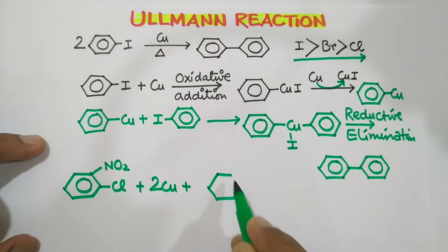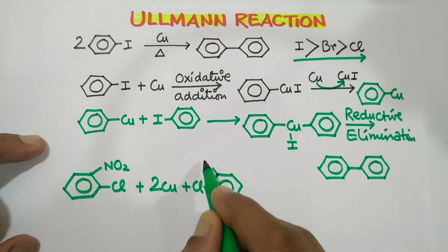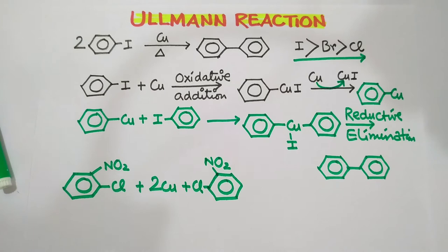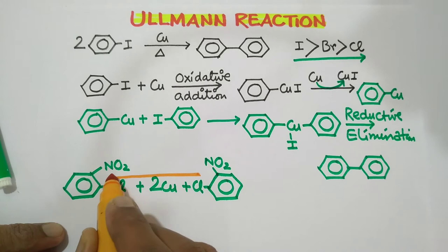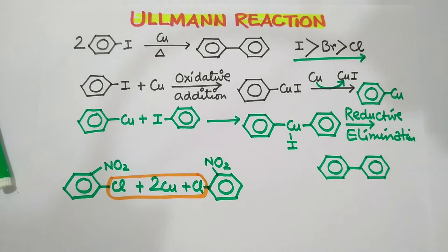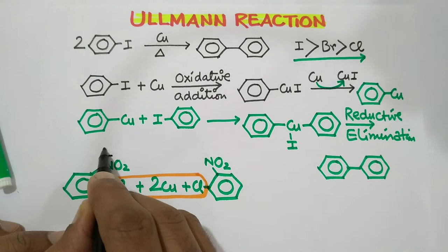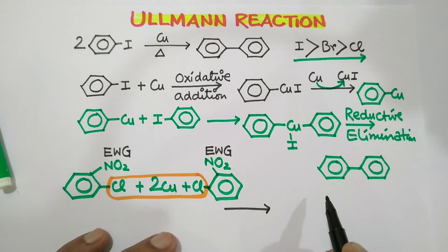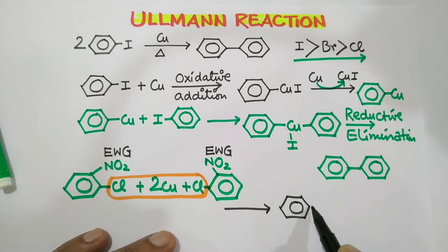...undergoes same type of coupling, just like nucleophilic substitution reaction in aromatic system, to replace this part and forms the biphenyl derivative. Means EWG, electron withdrawing group, promotes this type of Ullmann coupling reaction.